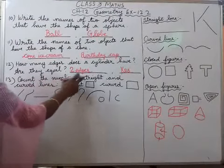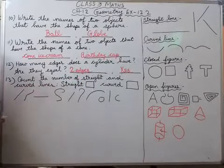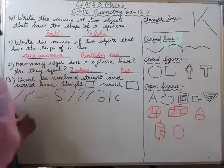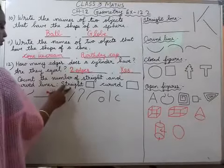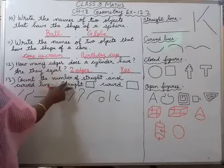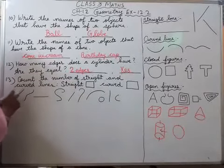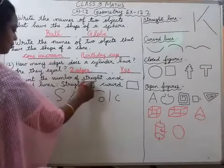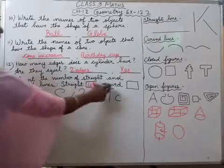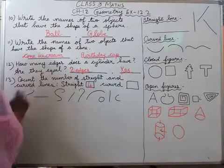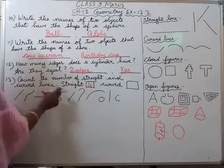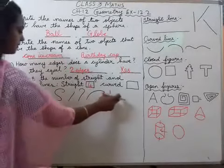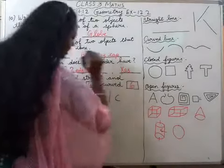Count the number of straight and curved lines. Ismein kitni straight lines hai? One, two, three, four — four straight lines. Curved kitni hai? Curved matlab teda meda — one, two, three, four, five, six — six curved lines.